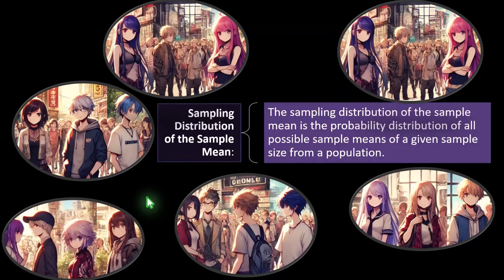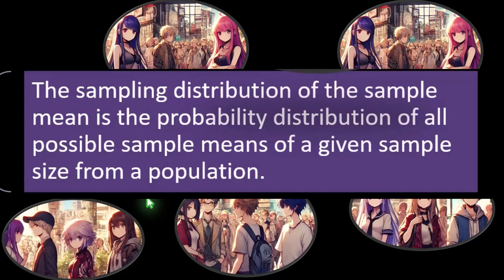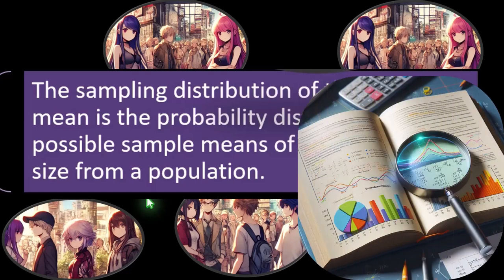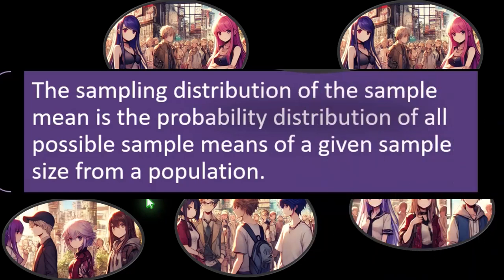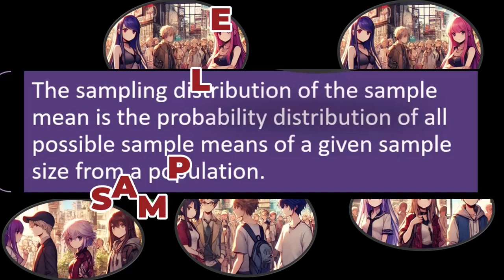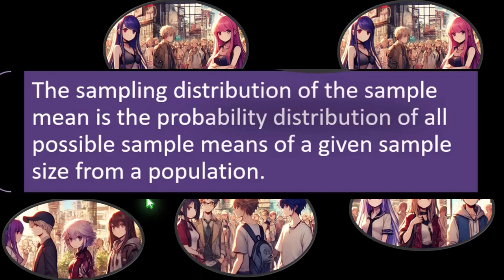Sampling distribution of the sample mean: the sampling distribution of the sample mean is the probability distribution of all possible sample means of a given sample size from a population. Here's the key — even if the actual data points are skewed left, skewed right, or normally distributed, if we take the mean of every possible combination of samples of whatever sample size we choose, that information will tend towards a bell-shaped curve.